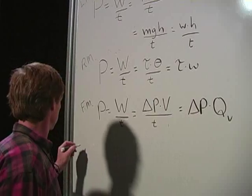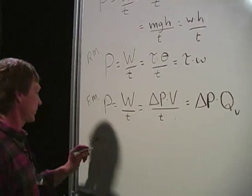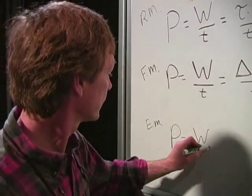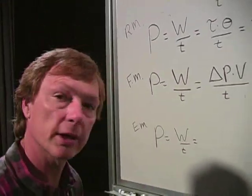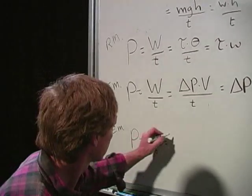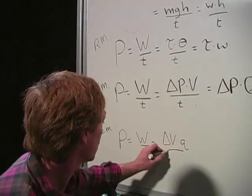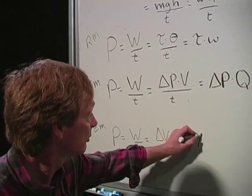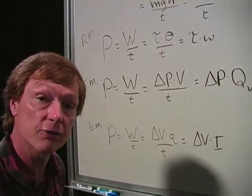Now, electrical work - call that EM. Power is work over time, which is - let's see - work is potential difference times the charge that's being displaced, delta V times Q over time. But charge over time, that's electrical current. So we've got voltage times current. So electrical power is just voltage times current.